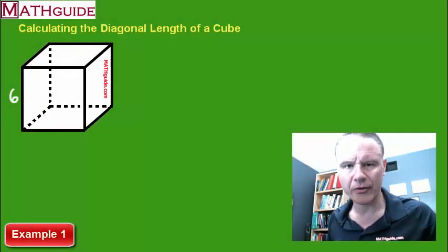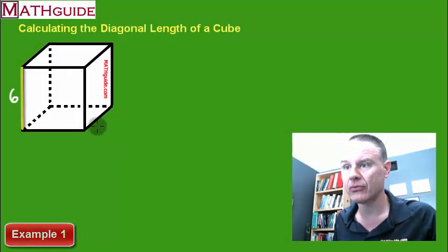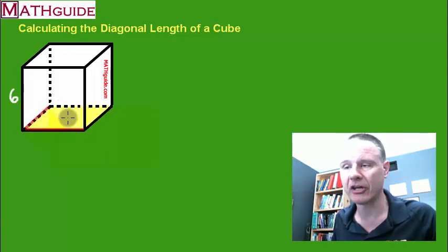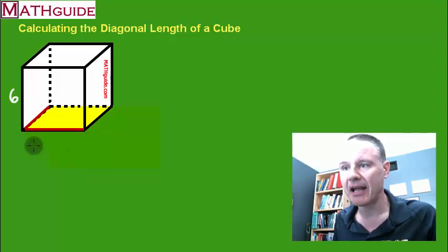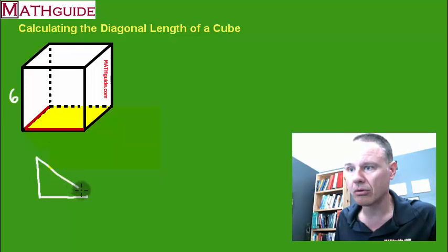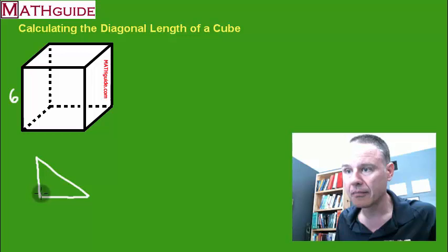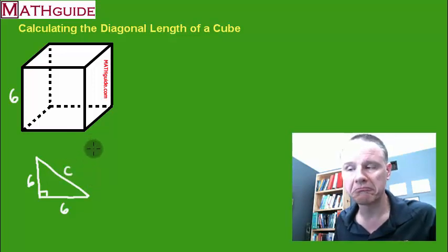Let's say we start with a cube that has edges all with a length of six. If we take a look at the bottom face, this edge and this edge intersect and both have a length of six. If we draw those, we get a right triangle — this side is six, this side is six. How do we find the diagonal, which I'll call C? The Pythagorean theorem.